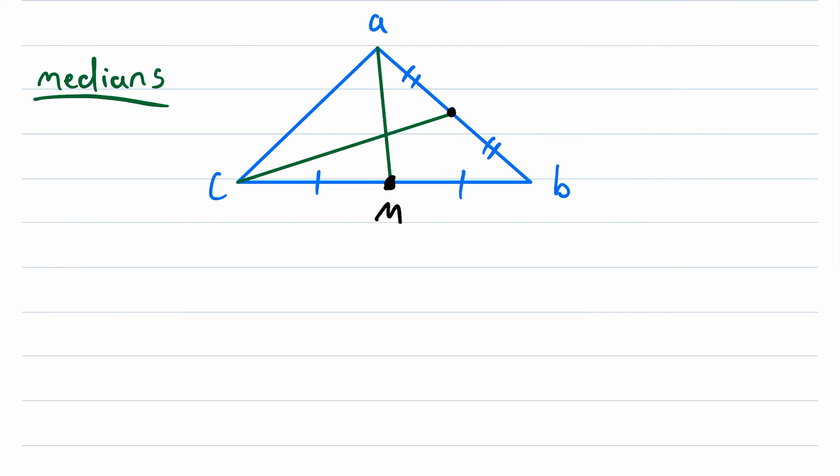So let's draw the last median from this vertex to the opposite side. Let's see, my hand is in the way, so I'm having a hard time with this one. That's about right there. And again, I'll mark this point here.